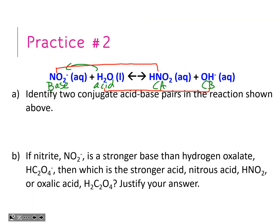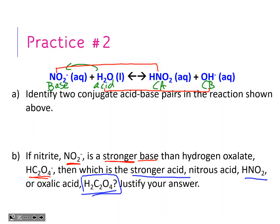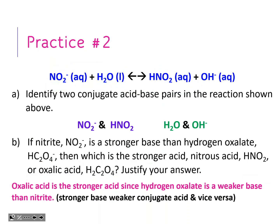If nitrite NO2- is a stronger base than hydrogen oxalate, which is the stronger acid - nitrous or oxalic acid? Oxalic acid is the stronger one. The stronger base makes a weaker conjugate acid, so nitrite being a stronger base means nitrous acid is going to be weaker. Since hydrogen oxalate is the weaker base, that means it's producing a stronger acid - oxalic acid. They're opposite each other: stronger base gives weaker conjugate acid, and vice versa.